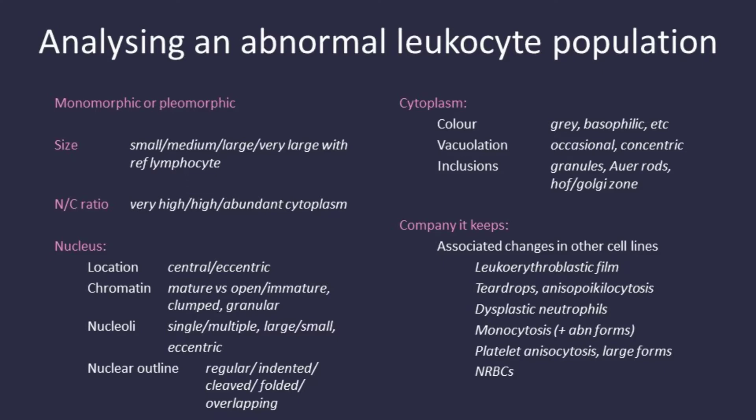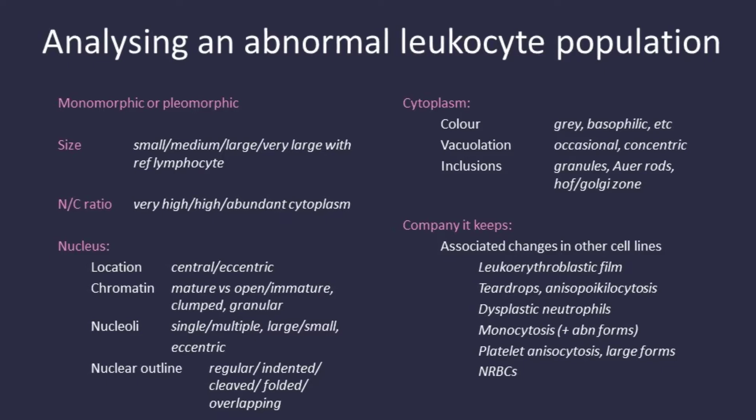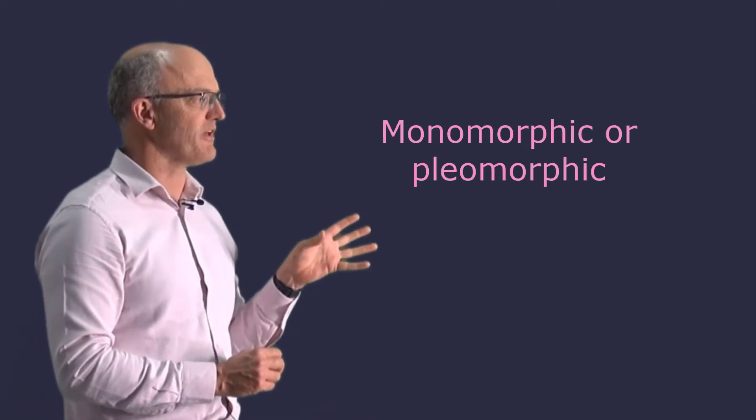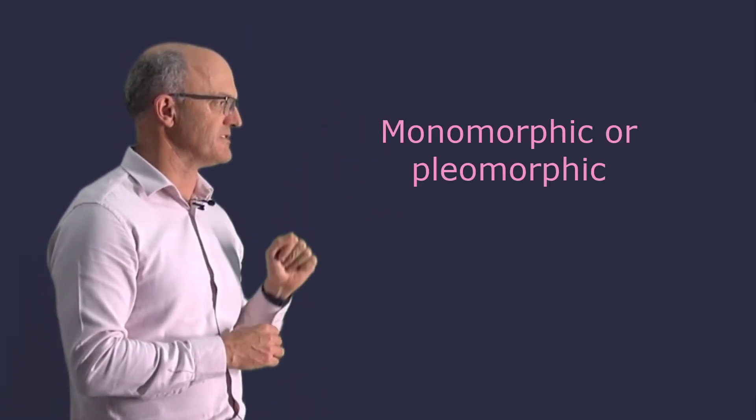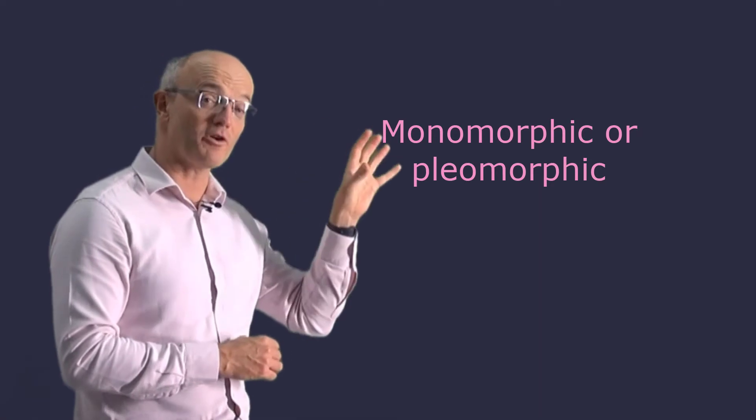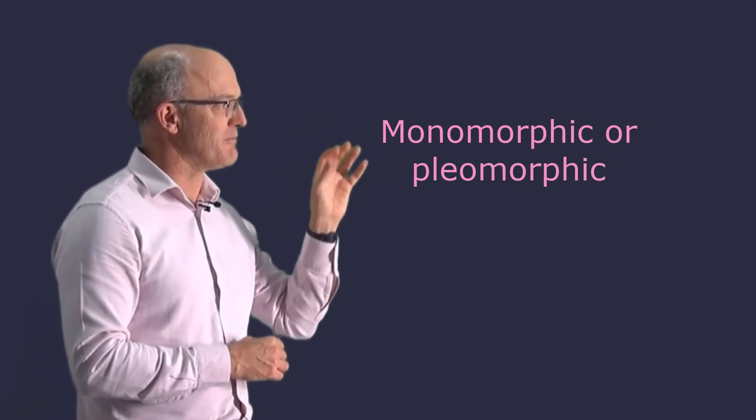Okay, so if you refer to that method, let's go through it now line by line. Firstly, is the population all the same or is there difference? And we term that monomorphic or pleomorphic.